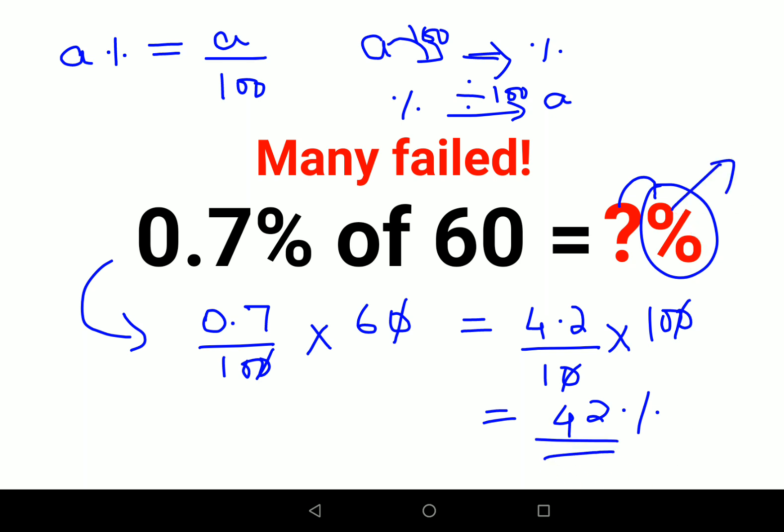And if this sign was actually not provided, and if it was just a question mark, then at this particular juncture which we got 4.2 upon 10, the answer would have been 0.42. That is the final answer for just finding the value of question mark without the percentage sign.